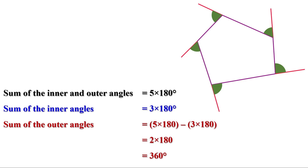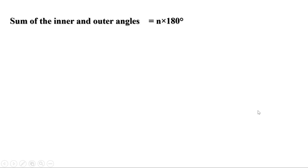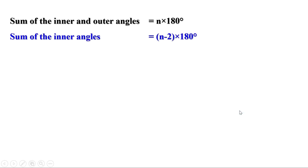Let us take an n-sided polygon. We know that the number of sides, angles, and outer angles for any polygon are the same. So for a polygon with n sides, the number of inner angles is also n and the number of outer angles is also n. At each vertex, the sum of the inner and outer angle is 180 degrees. Since there are n vertices, the total sum of inner and outer angles is n × 180 degrees. The sum of the inner angles of an n-sided polygon is (n − 2) × 180 degrees.